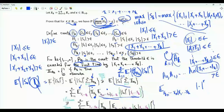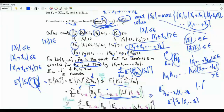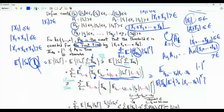Specifically, this inner conditional expectation is greater than or equal to the absolute value of the conditional expectation of S_n given X_1, ..., X_k, raised to the power r. After applying Jensen's inequality, we still have the indicator and the outer expectation.